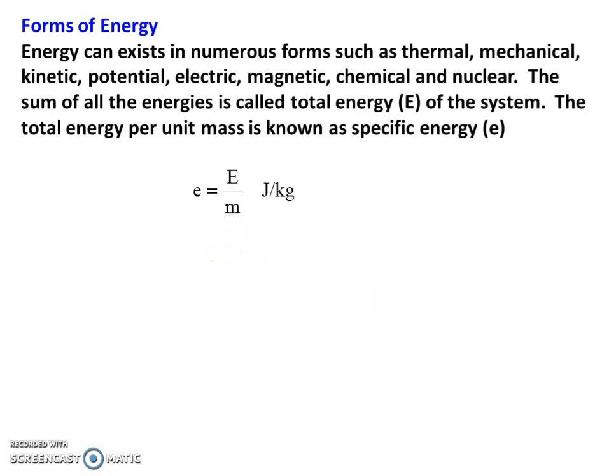First, forms of energy. Energy is the capacity to do some work, or rate of work done. Energy can exist in numerous forms such as thermal, mechanical, kinetic, potential, electrical, magnetic, chemical and nuclear. The sum of all the energy is called the total energy of the system. For any system, the sum of all forms of energy is the total energy of the system. The total energy per unit mass is known as specific energy.